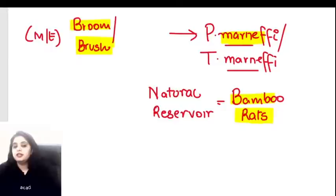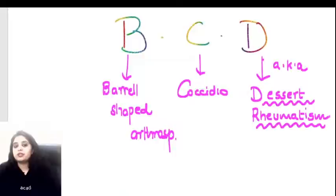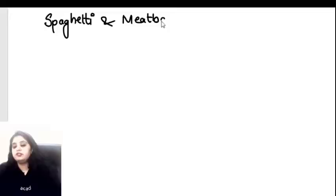That completes a rapid revision of fungal organisms. Extra questions for NEET PG students: spaghetti and meatball appearance is seen in Malassezia furfur. But on a Pap smear, where can spaghetti and meatball appearance be seen? Think of Pap smear - cervical infections.